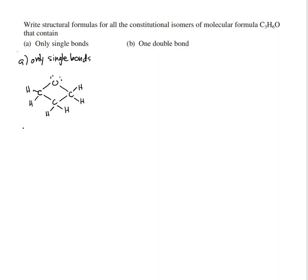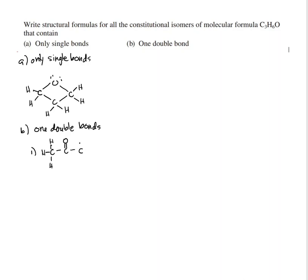Now for part B, with one double bond. The first structure has a carbon double-bonded to oxygen (C=O) off the middle carbon, with three H's at the carbon on the left and three H's at the carbon on the right, and two lone pairs on the oxygen. That is C3H6O.